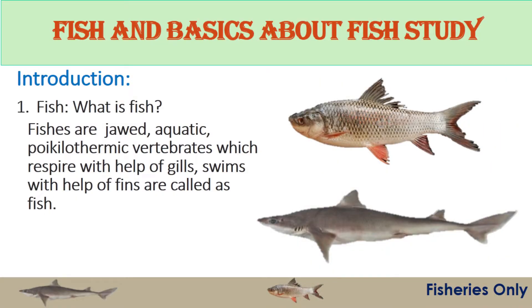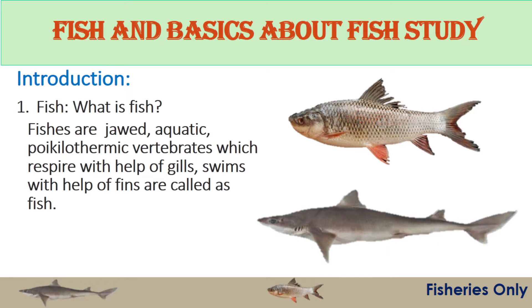Now we will discuss what is fish. Fish is nothing but an aquatic, jawed, poikilothermic vertebrate which swims with the help of fins and respires with the help of gills. Animals are called fish if they are poikilothermic — that means cold-blooded — aquatic animals having a notochord or vertebral column with jaws, that is upper jaw and lower jaw.